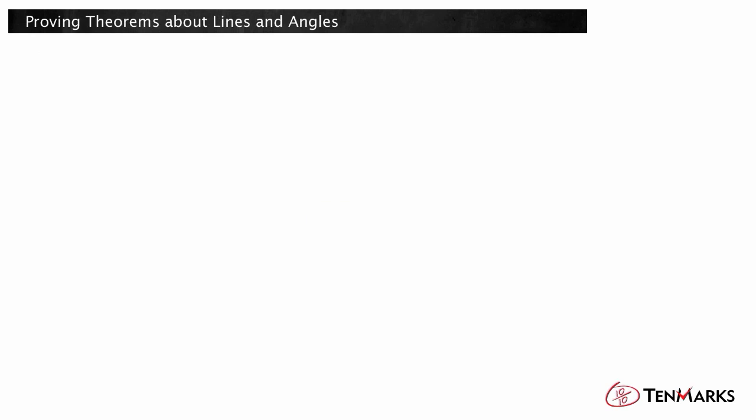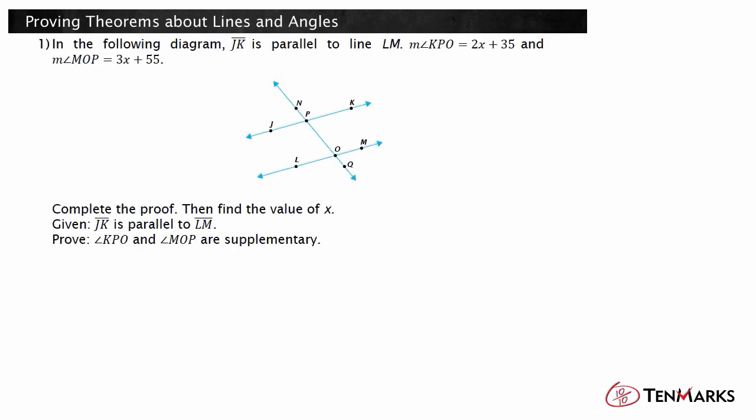You can use this information to write a two-column proof and determine a missing measure. In the following diagram, JK is parallel to line LM. The measure of angle KPO is 2x plus 35, and the measure of angle MOP is 3x plus 55. Complete the proof, then find the value of x.